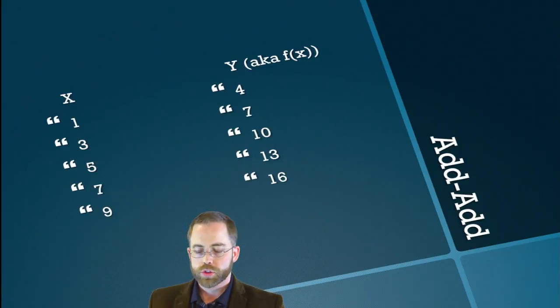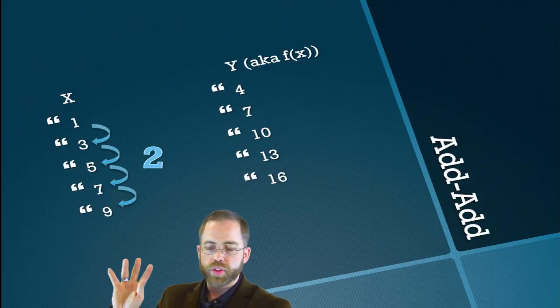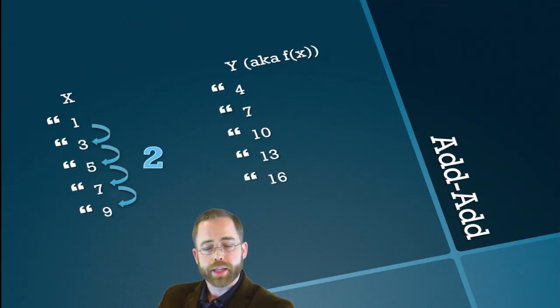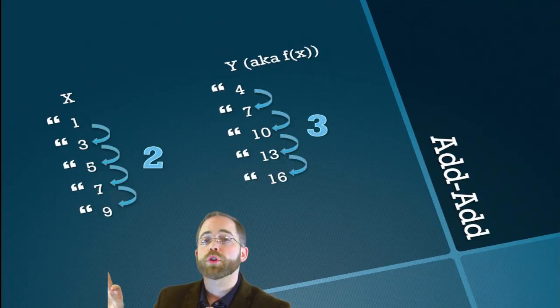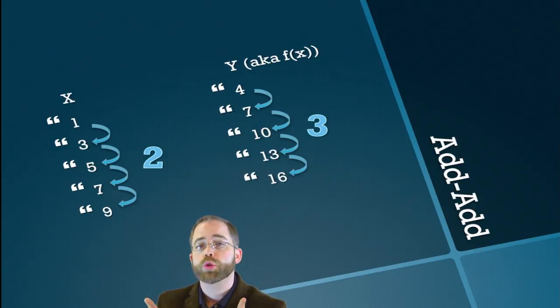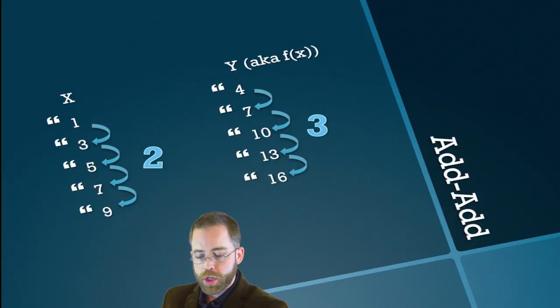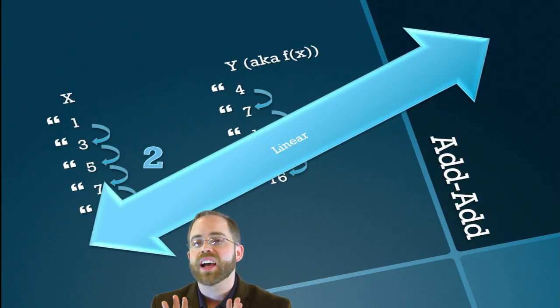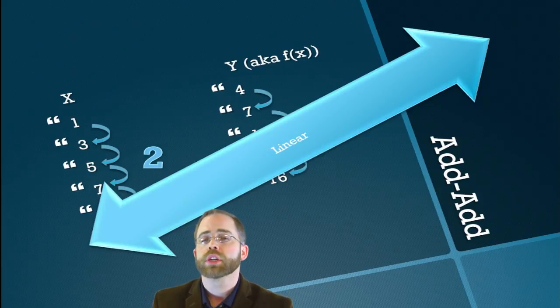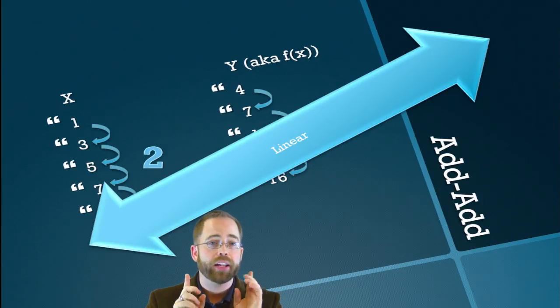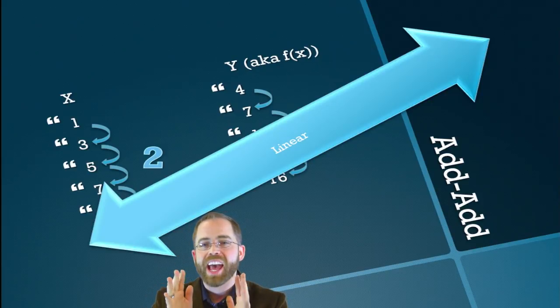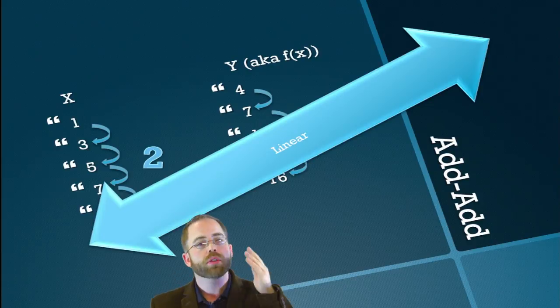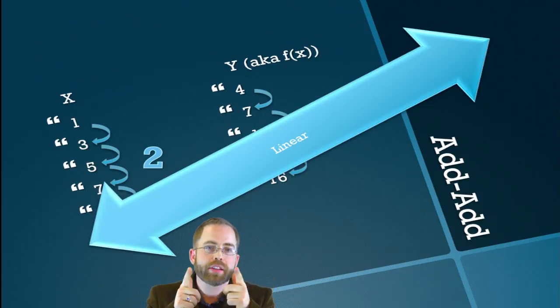You don't have to think so hard. So if you look at that and you say the X's are going up by addition, for the corresponding Y's, we've got to match ordered pairs up, they're being added by 3 every time. So that means this is a linear, linear kind of equation. So that's the add-add. This is an add-add pattern. The X's are adding. The Y's are adding. It's linear.